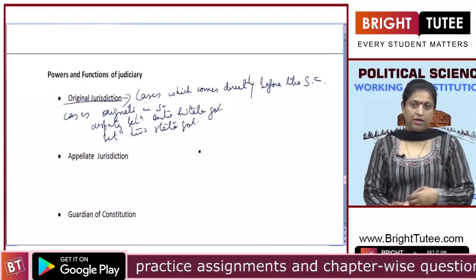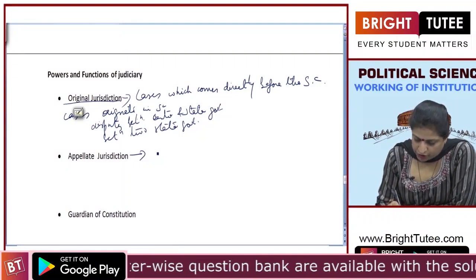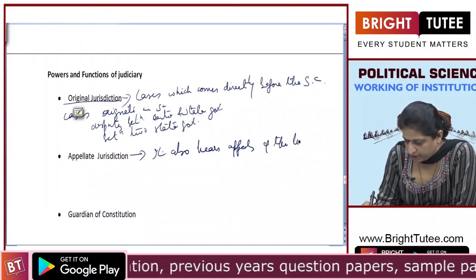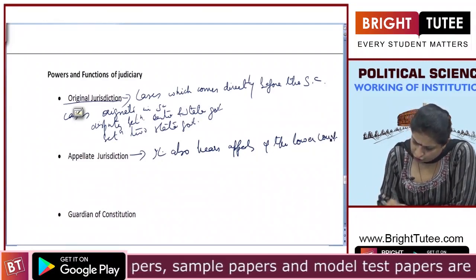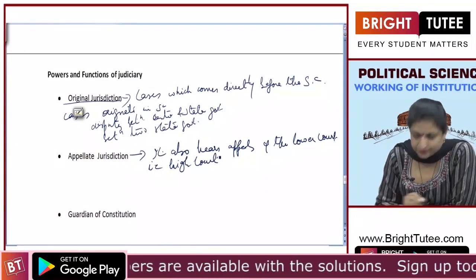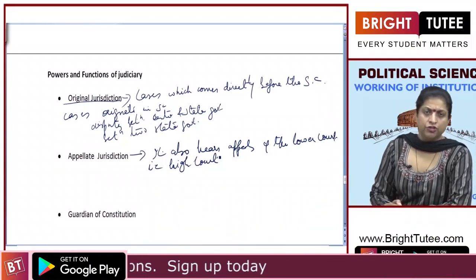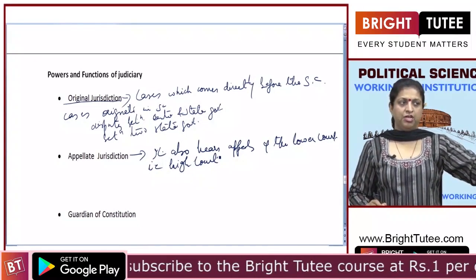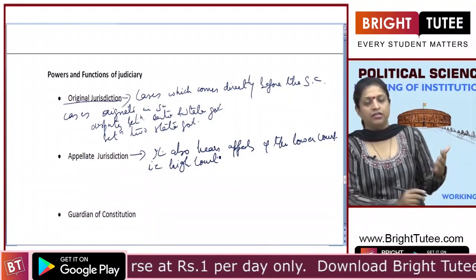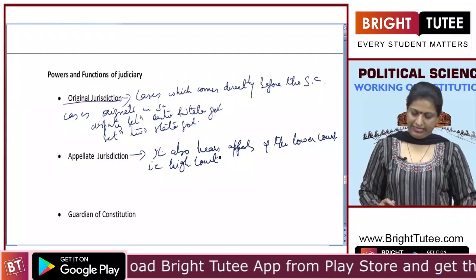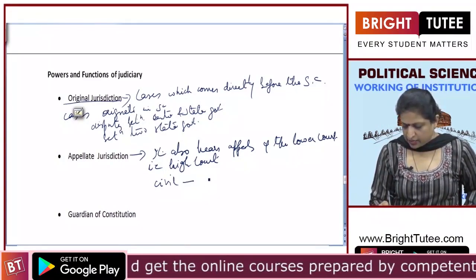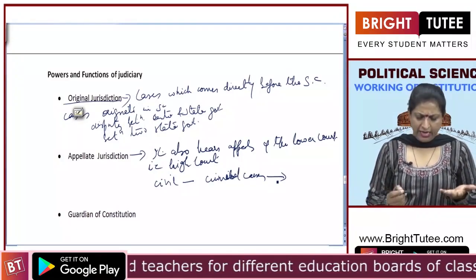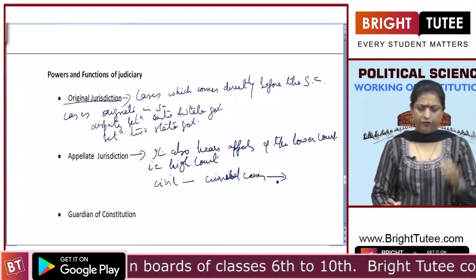The next power is appellate jurisdiction — the Supreme Court also hears appeals from the High Court. Any appeal can go to the Supreme Court, and sometimes the High Court itself certifies that a particular case involves the interpretation of the Constitution, so it is referred upward. This is because the Supreme Court is the guardian of the Constitution. All civil and criminal cases can be appealed, and the Supreme Court has the power of appellate jurisdiction.